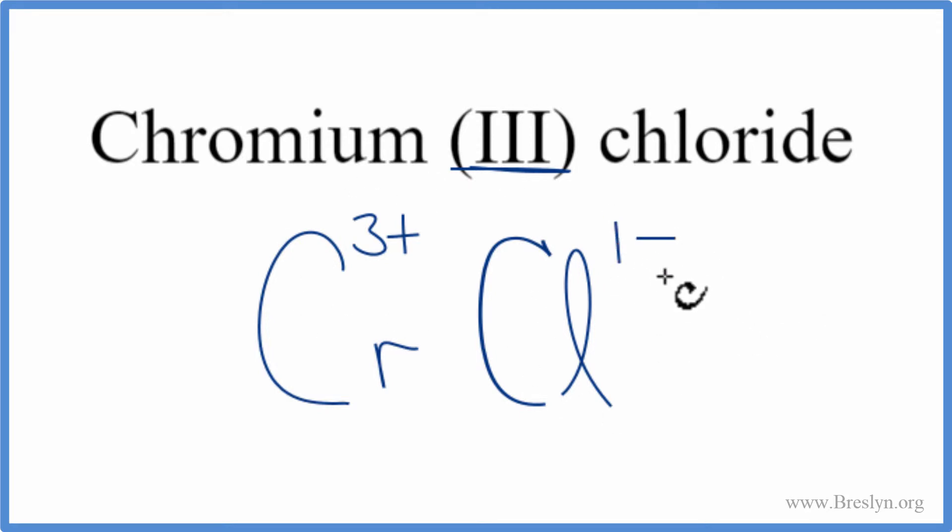So these don't add up to zero, but we can change the subscripts here to make that happen. We use something called the crisscross method. We move the one here and the three over here. We don't write the one, get rid of this, and that's the formula for chromium three chloride.